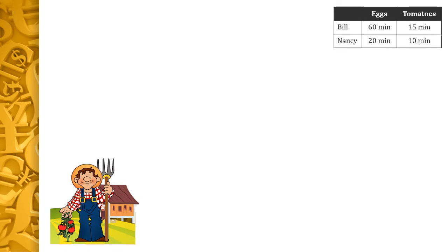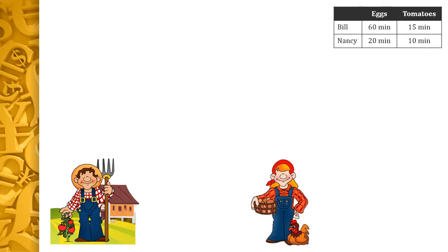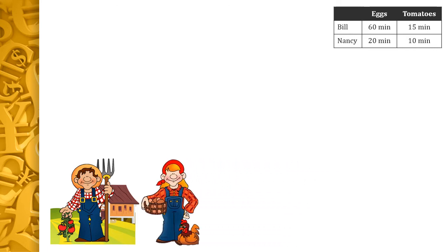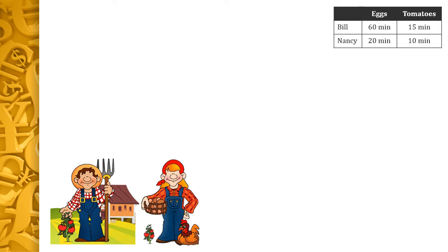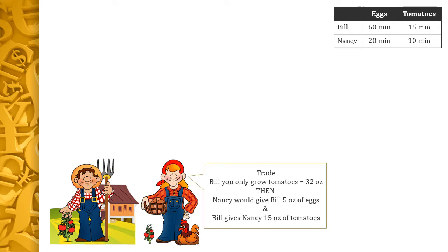Bill is happily growing tomatoes and raising chickens when Nancy comes over and says her tomato plants are smaller and scrawnnier than his, and her son has been working on the computer figuring things out. Her son says if she trades with Bill, they might all come out better. She proposes: if Bill grows just tomatoes — 32 ounces in one day — she'll give him 5 ounces of eggs in exchange for 15 ounces of tomatoes.